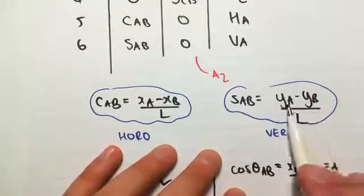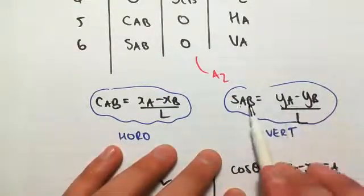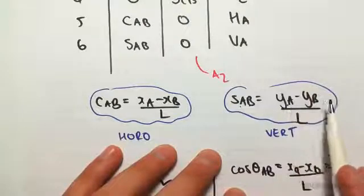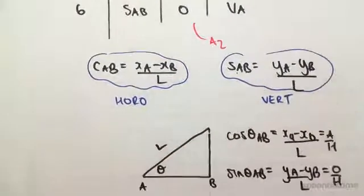The very important thing to notice is that it's AB, so it's A minus B. If it was BA, it would be yB minus yA. That's very, very important and we're going to see why in a second.